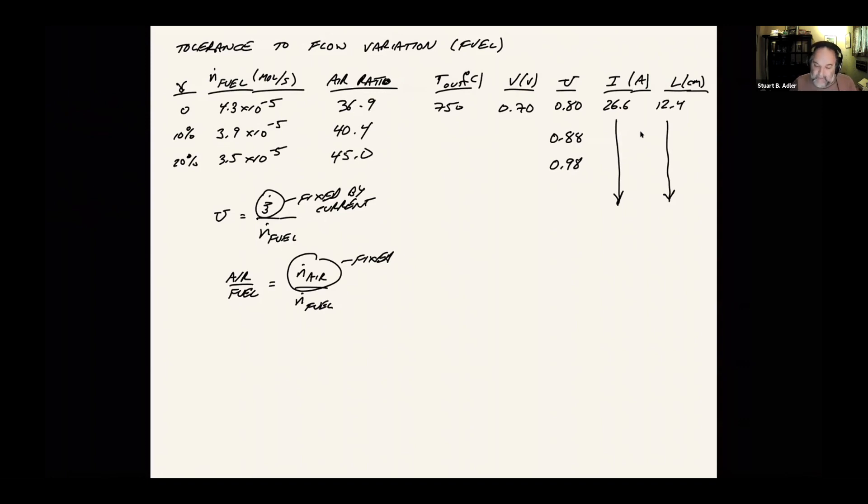We can do the same thing as we did before with the spreadsheet, where we set our objective function. But this time we're going to let the outlet temperature vary, the cell voltage vary. We're forcing the length to be 12.4 centimeters, and we're forcing the utilization to be what it is according to these ratios that I just outlined. And if we do that, kind of an interesting result. 10% flow variation, temperature goes up a little bit, cell voltage hardly changes. And then at 3.5 times 10 to the minus 5 moles per second, 761, cell voltage goes up a little bit.